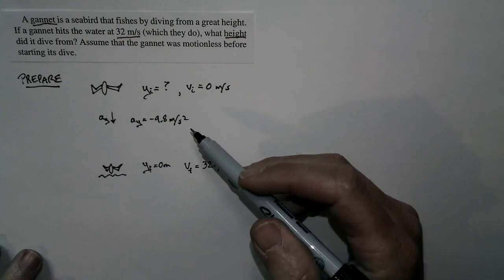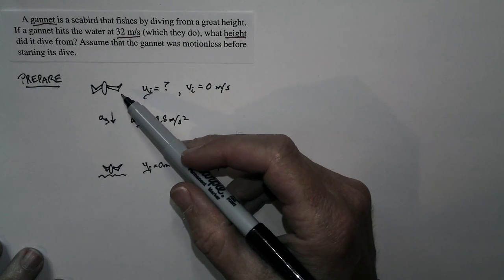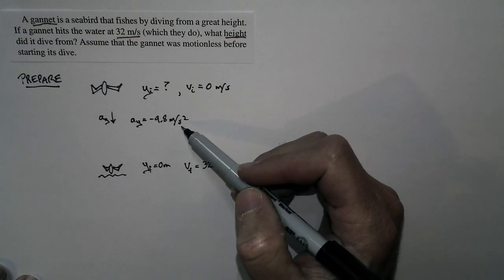From here to here, it's accelerating at 9.8 meters per second squared downward. So the acceleration is negative 9.8 meters per second squared. This is a one-dimensional motion problem. We know the initial speed, the final speed, the final position, and the acceleration.